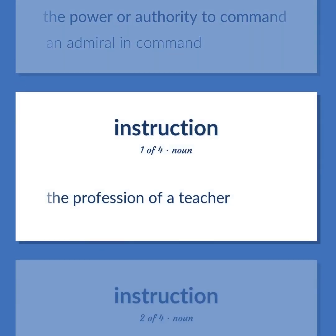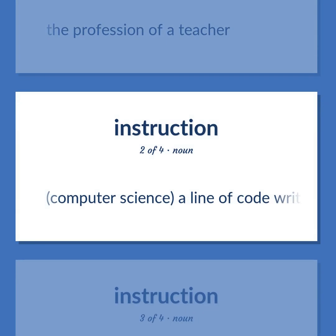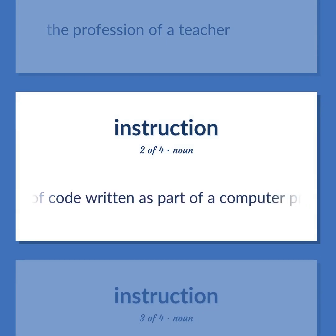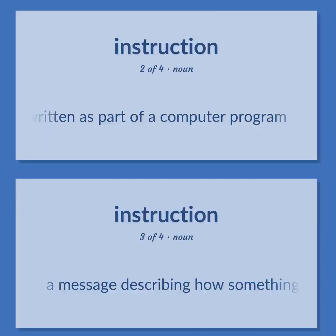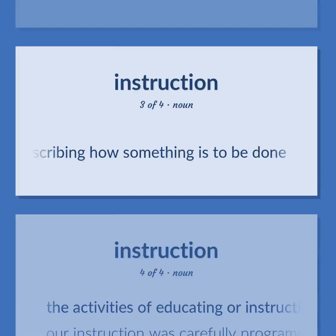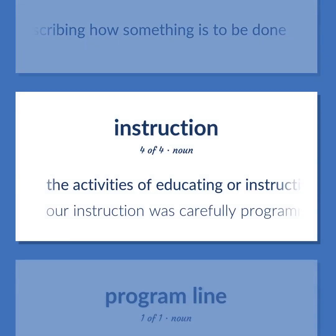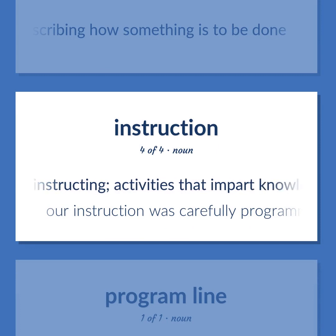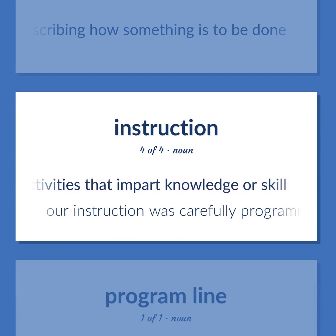The profession of a teacher. Computer Science: A line of code written as part of a computer program. A message describing how something is to be done. The activities of educating or instructing; activities that impart knowledge or skill. Our instruction was carefully programmed.